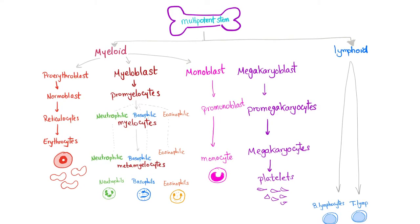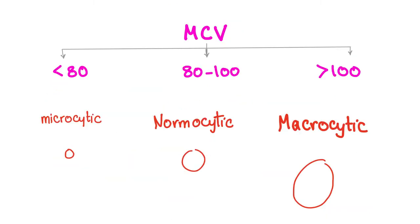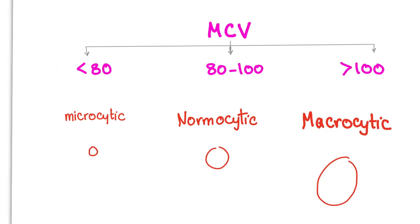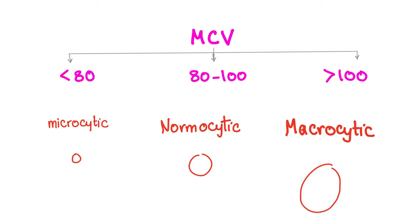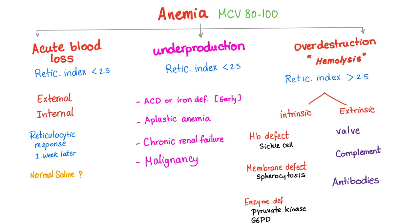Hematopoiesis: stem cells, then we go down to myeloid and lymphoid, and here is the red blood cell line — only this line is affected; all others are completely normal. The story of MCV: microcytic, normocytic, or macrocytic. In aplastic anemia as well as pure red cell aplasia the MCV is normal, 80 to 100. Normocytic anemia has three causes: acute blood loss, underproduction, and over-destruction. Aplastic anemia as well as pure red cell aplasia fall in the same underproduction category.